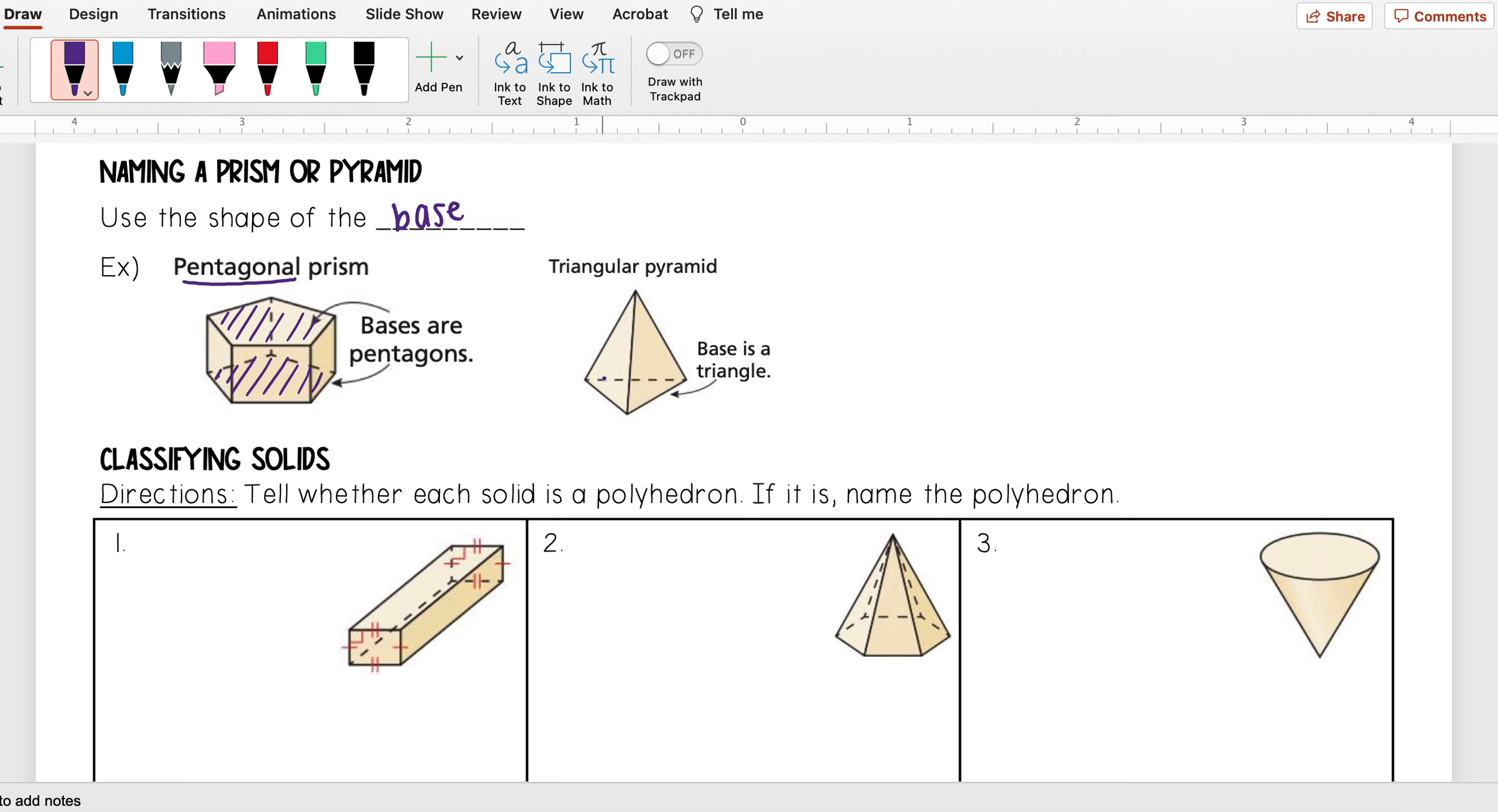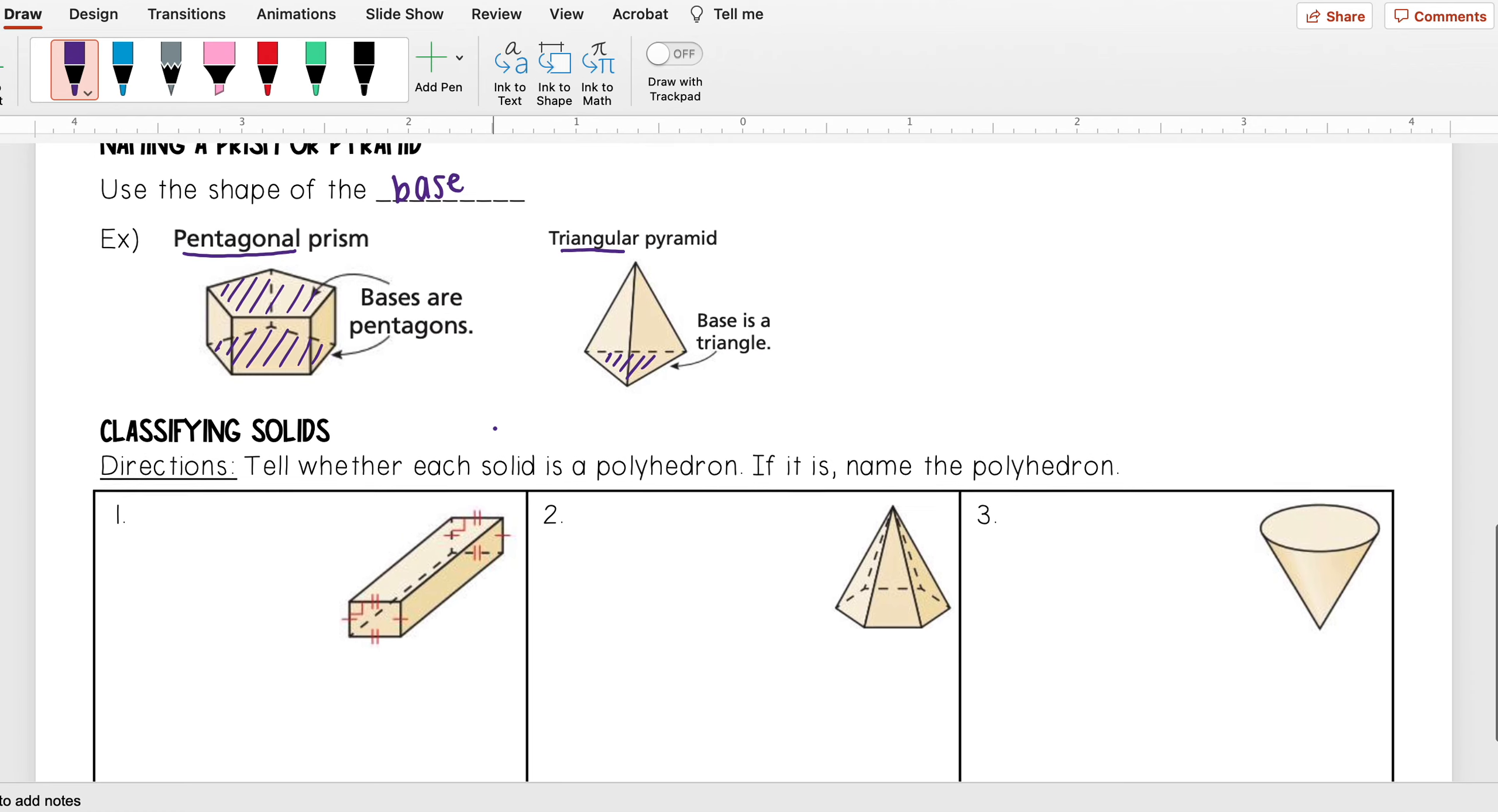Here we see that my base is a triangle. I see this shape is a pyramid, so I call it a triangular pyramid. So let's go through some more examples.